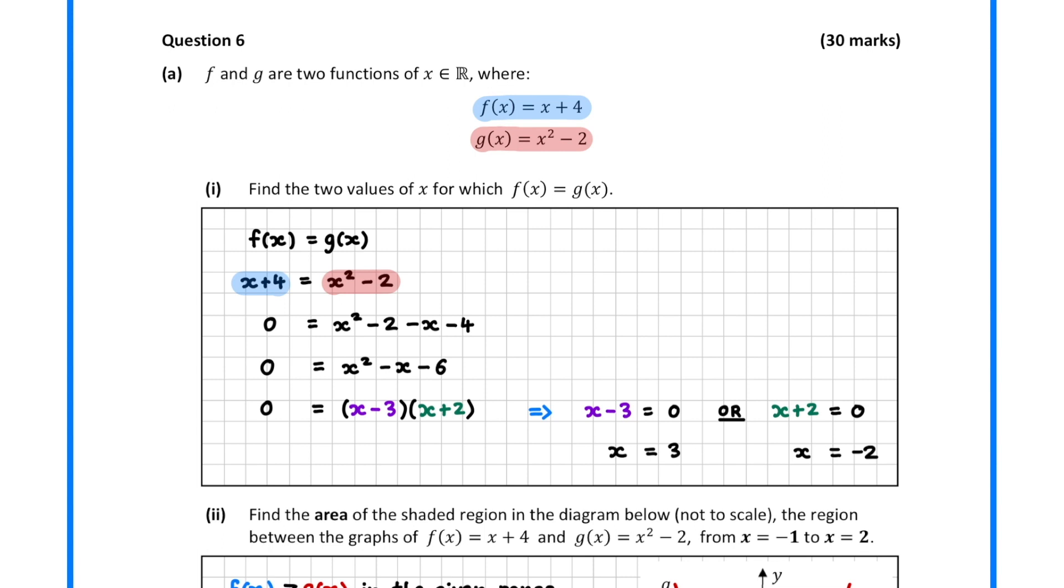To solve this we begin by setting the function definitions equal to each other. Then we group everything together by subtracting from both sides.